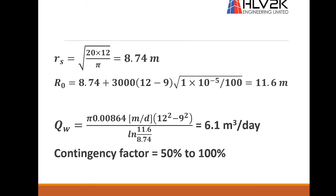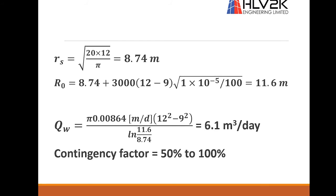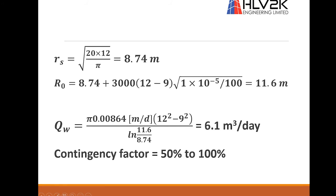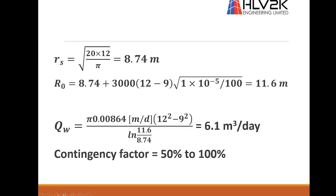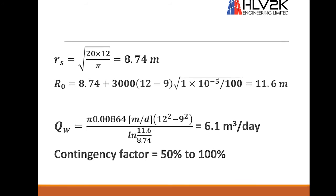Radius of influence then will be calculated from Sichart equation. As I mentioned, hydraulic conductivity must be in meter per second. So it will be 11.6 meters. And by substituting it into the unconfined equation, the dewatering rate for this example will be 6.1 cubic meters per day.